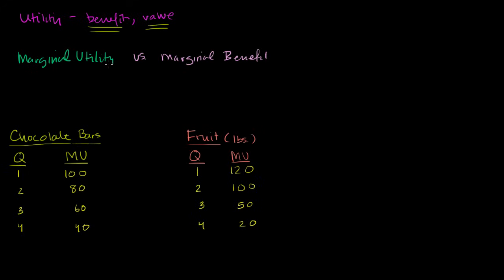How are these two things different? The simple answer is, conceptually they aren't — they are the exact same thing. The difference is how the words tend to be used in the context of a traditional microeconomics class. When people talk about utility, they tend to measure it in terms of some type of absolute measure — utility units, satisfaction units. While when they talk about marginal benefit, they tend to measure it either in dollars or in terms of some other goods. But I've seen either term used either way, so they really do mean the exact same thing.